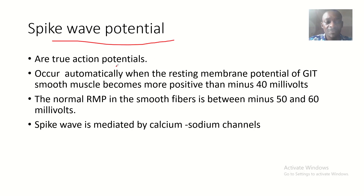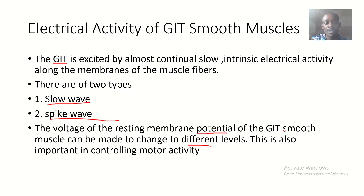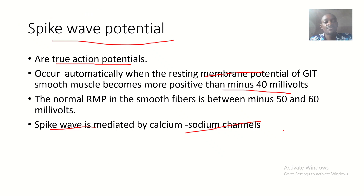Now let's talk about spike waves. Spike waves are true action potentials, and they occur automatically when the resting membrane potential of GI smooth muscles becomes more positive than minus 40 millivolts. The normal resting membrane potential in smooth muscle fibers is between minus 50 and minus 60 millivolts. The spike wave is mediated by calcium-sodium channels. This covers the electrical activities of the GI tract — the smooth wave and spike wave potentials.